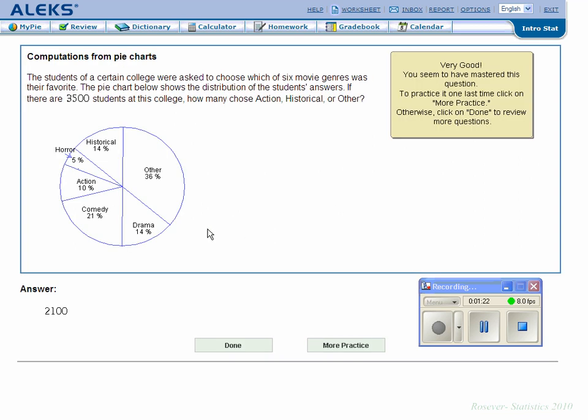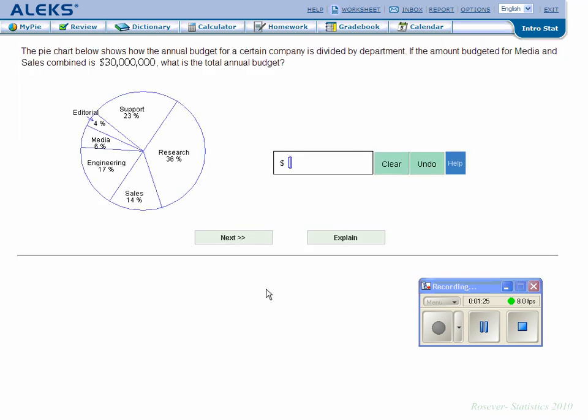If you rush, you might not see it. Let's try more practice. The pie chart shows the annual budget for a certain company. Sales combined is 30 million. What is the total annual budget? So sometimes they give you the whole pie and say find these parts, sometimes they give you a part and say find the whole pie. 30 million represents 14%. You can do this two ways: set up a proportion or do some algebra.